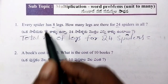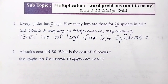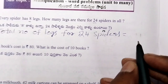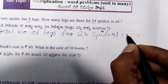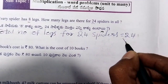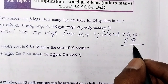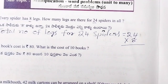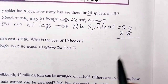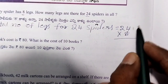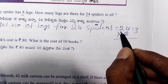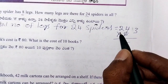24 into 8. 8, 8. 8 fours are 32. 8 twos are 16.